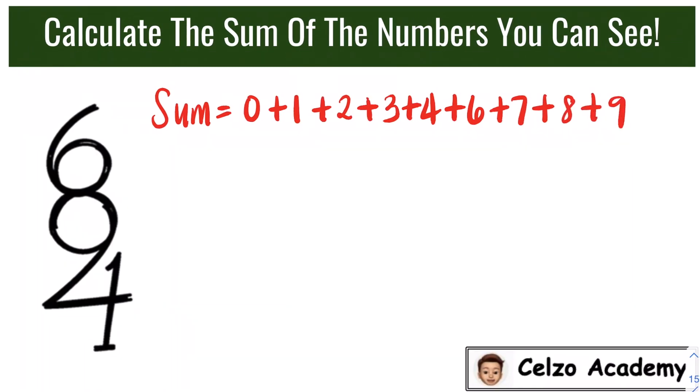To find the sum mentally, we can pair up sums of 10. 1 and 9, that's 10. 2 and 8, that's another 10. 3 and 7, that's a 10. And 4 and 6. So we have 4 pairs of 10. So the sum is 40, not 45, because 5 is not in this number.